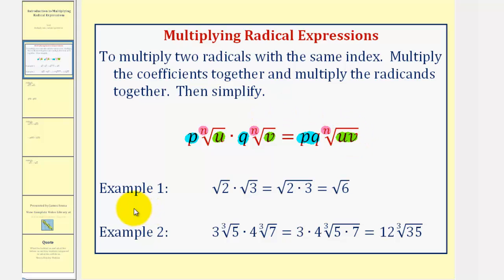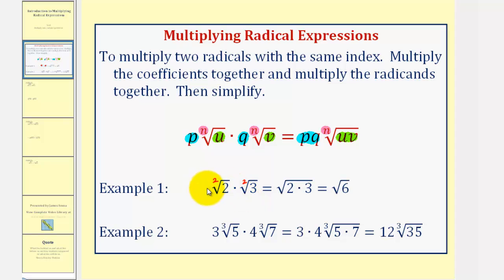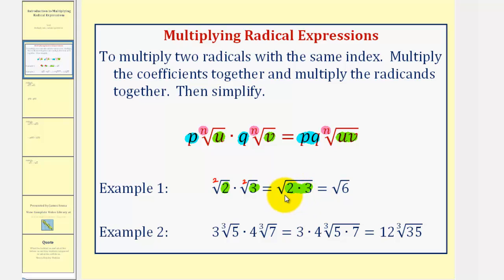Looking at a couple examples here, notice how we have the square root of two times the square root of three. We have the product of two square roots, so the index is two — the indexes are the same. The coefficients are one, and therefore we can just multiply the radicands together, which would be two times three. We can tell this won't simplify, and therefore our product is square root of six.